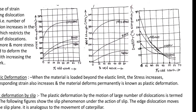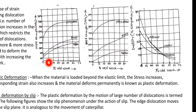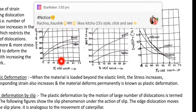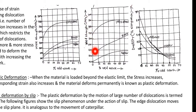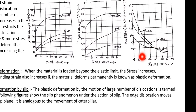As we increase the percentage of cold work, the yield strength of copper, brass, and 1040 steel all increase. Automatically, tensile strength also increases with increasing percentage of cold work. However, ductility decreases as the percentage of cold work increases.